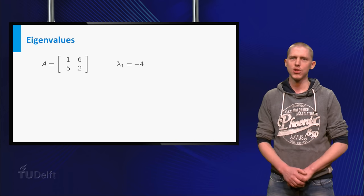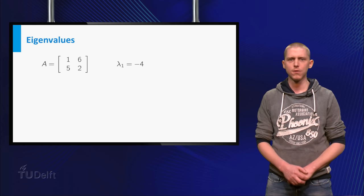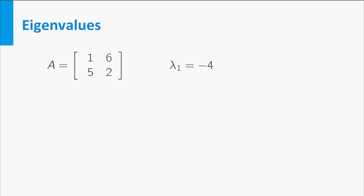The previous example showed that U was an eigenvector of A with eigenvalue minus 4. Could A have more eigenvalues besides minus 4? Let us try whether 1 is an eigenvalue of A.